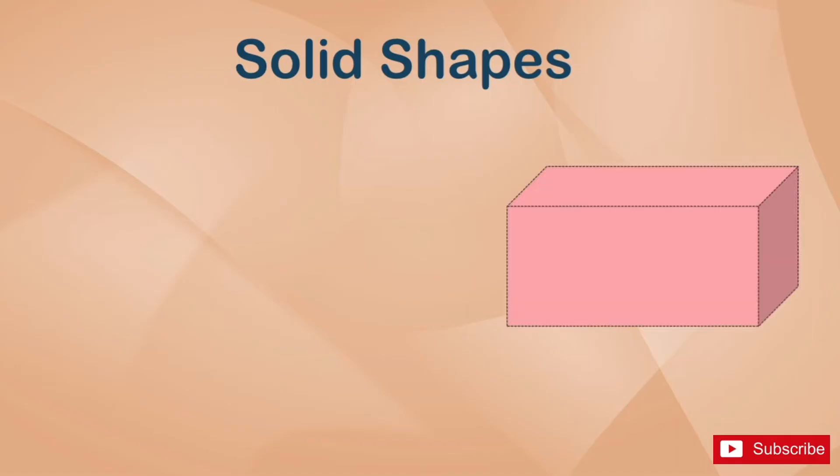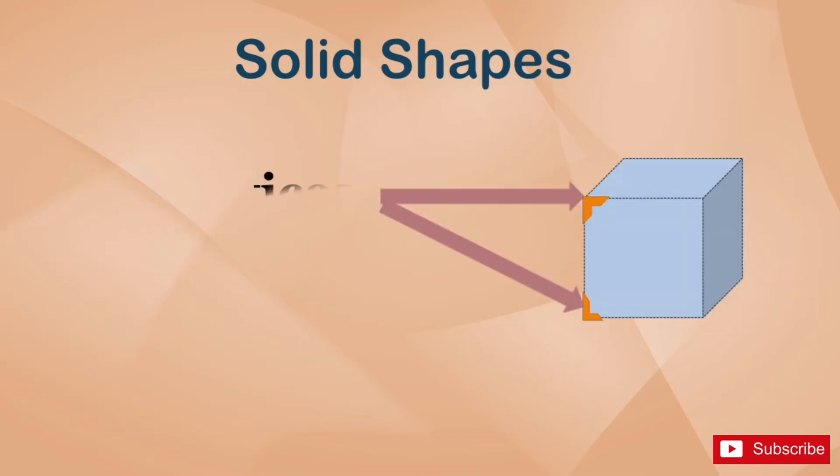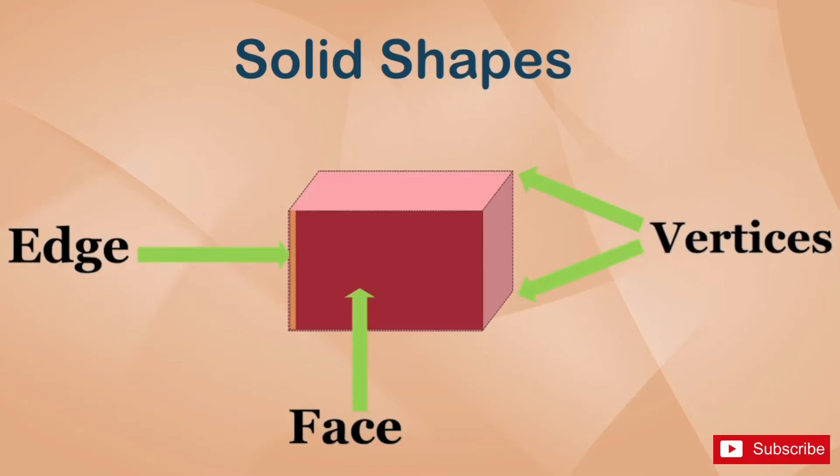Solid shapes also have edges. An edge is where two faces meet. Solid shapes also have vertices. A vertex or vertices is the point where three or more faces meet. Solid shapes have edges, faces and vertices.